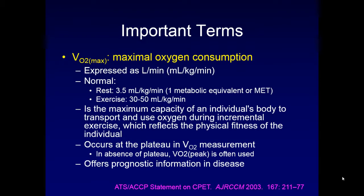Perhaps the most important term we use in exercise testing is VO2 max, or maximal oxygen consumption. This is often expressed as liters per minute, or by weight as milliliters per kilogram per minute. A normal VO2 max at rest ranges between about 0.9 and 5 mL/kg/min, but the standard accepted value is about 3.5, which is also defined as one metabolic equivalent, or one MET.